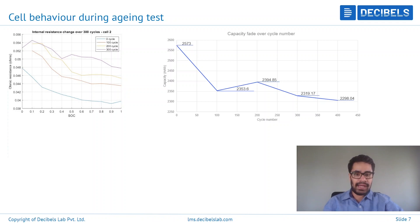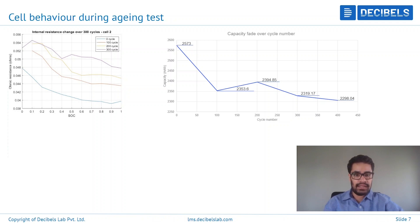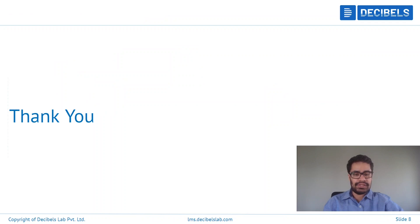To summarize, in this video we have seen what are all the different types of tests that can be performed on lithium-ion cells and on battery packs, and some of the results that we can interpolate from these tests — understanding how exactly the cell behaves under different current, different modes, different pulses, at different temperatures, and also at different states of health. Thank you for watching this video. I hope this video was useful.